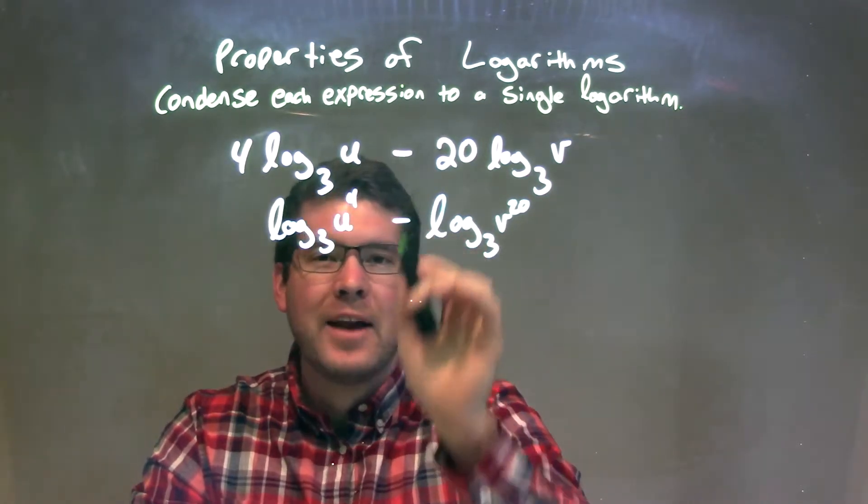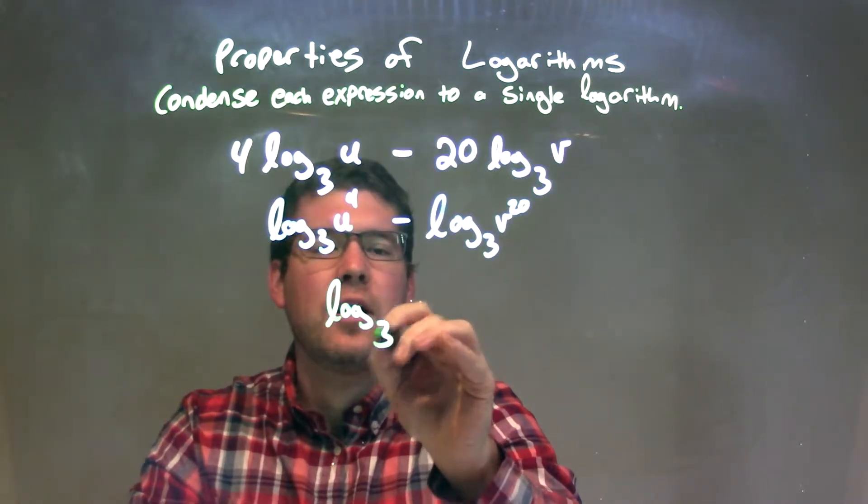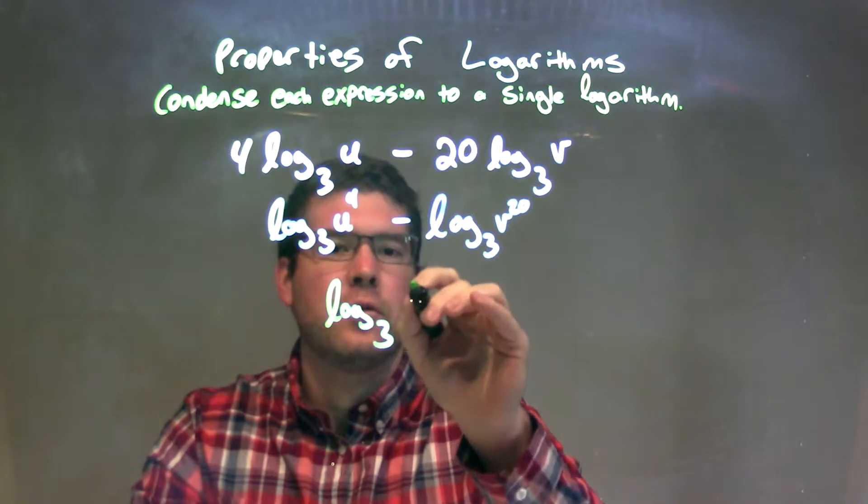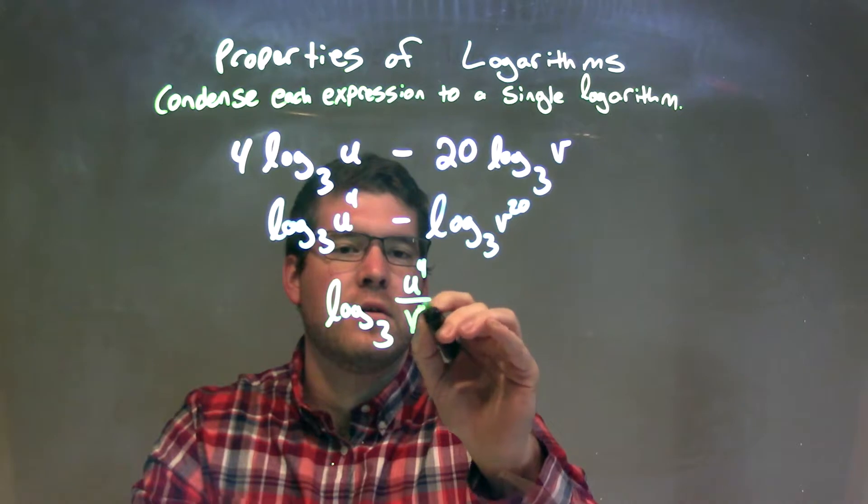When we do that, we see a subtraction. That turns into division. So we have log base 3 of, now, this first one, u to the 4th, divided by the second one, v to the 20th power.